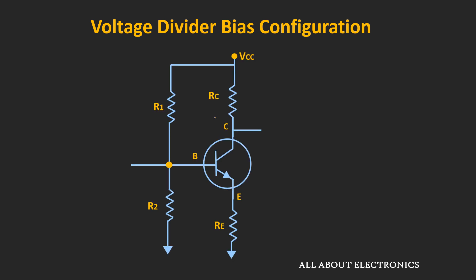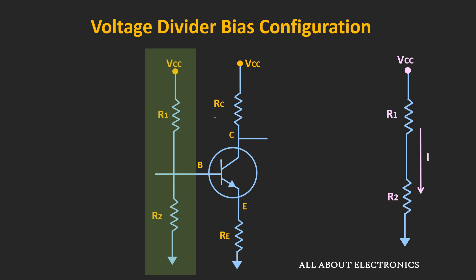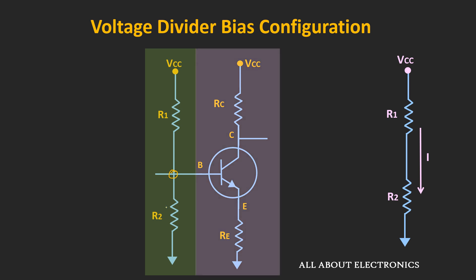Now, if you see this circuit, the same circuit can also be represented like this. And if we focus on this portion of the circuit, then we can apply the voltage divider rule only if the same current is flowing through both resistors, or in other words, when these two resistors are connected in series. But at this node, this entire circuit is also connected. So in that case, we need to find the Thevenin's equivalent of this particular circuit at this node.